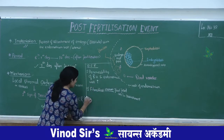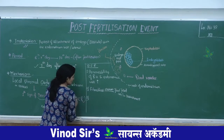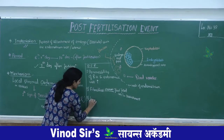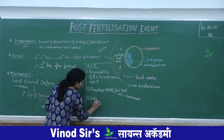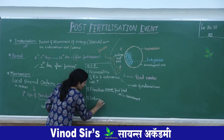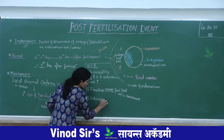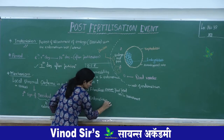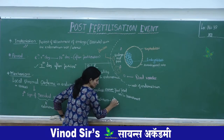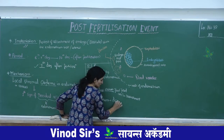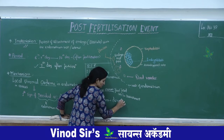The third change is that the endometrium disrupts. The endometrium layer is disrupted to allow the blastocyst to embed within it.